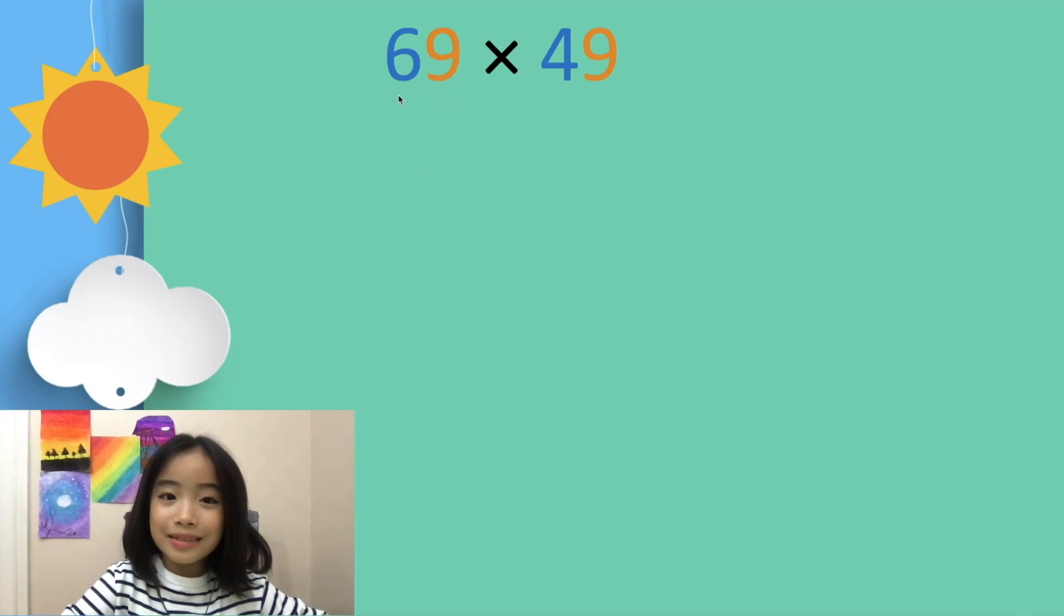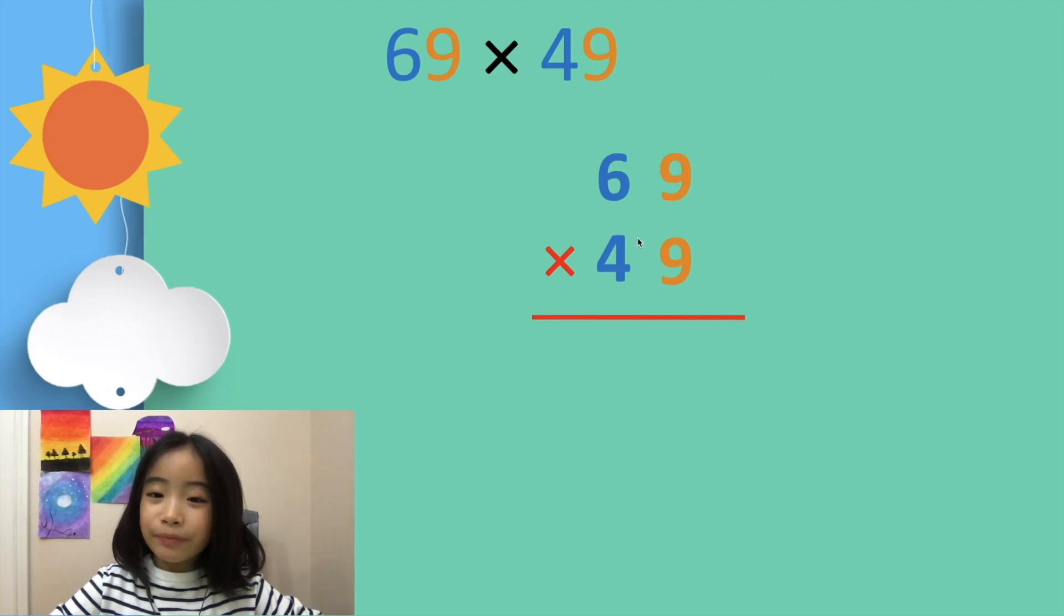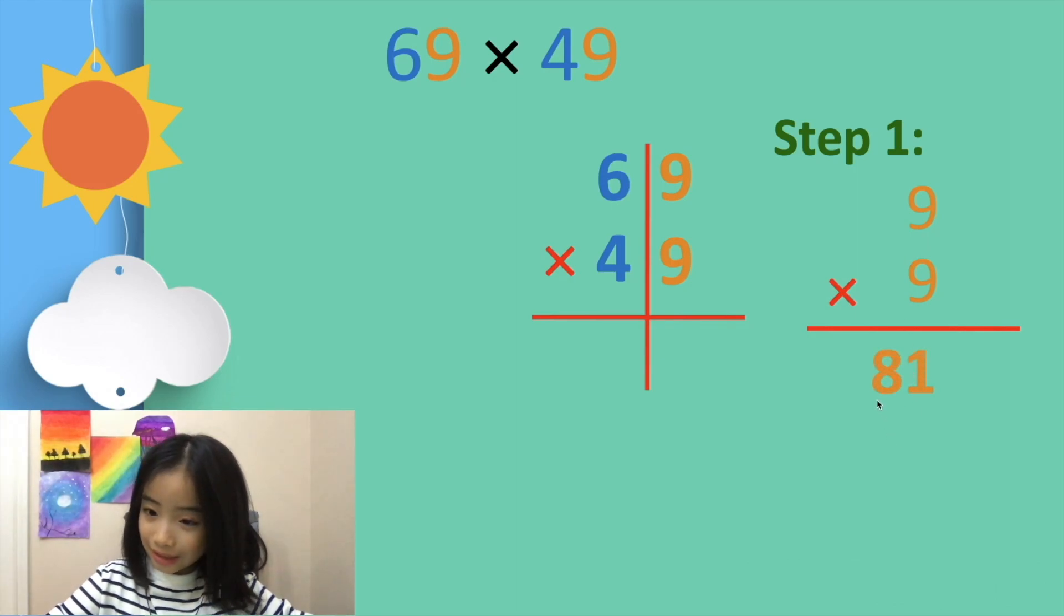First, let's use 69 x 49 as our example. We write it in our normal vertical form. And then we split it in half, the ones position and the tens position. Step 1: Multiply the ones digit. 9 x 9 equals 81.